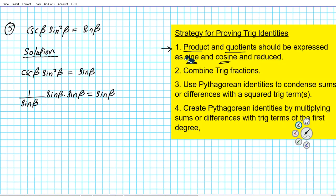Alright, so now applying number one in our strategy list, we can now see that there are common factors that can be divided out, namely sine beta. So sine beta and sine beta can be divided out. We have one.